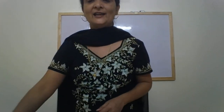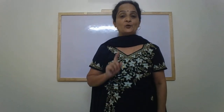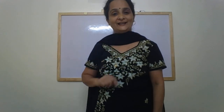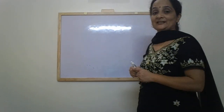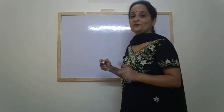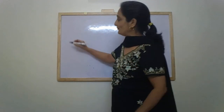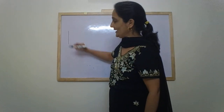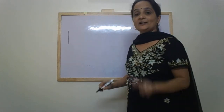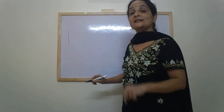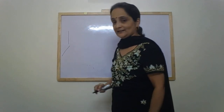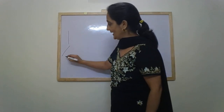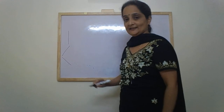Alright. So, today in this video, we are going to learn to write the letter K. K is formed with the help of one standing line and two slanting lines. Slanting line and slanting line.